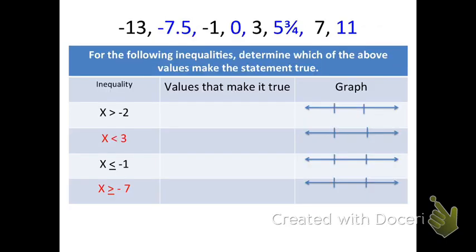Now we're going to get into some practice problems. Up top you have numbers starting at negative 13, going to negative 7.5, and continuing all the way through positive 11 — those are possible solutions for the four inequalities listed below. For the following inequalities, determine which of the above values make the statement true. The first inequality says x is greater than negative 2. Negative 13 and negative 7 do not make it true, but negative 1, 0, 3, 5 and 3 fourths, 7, and 11 all make that statement true — those are all possible solutions.